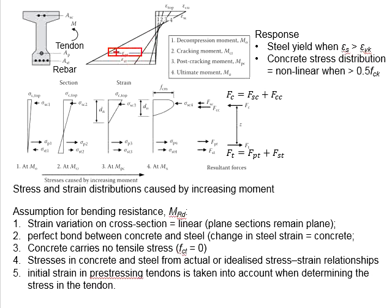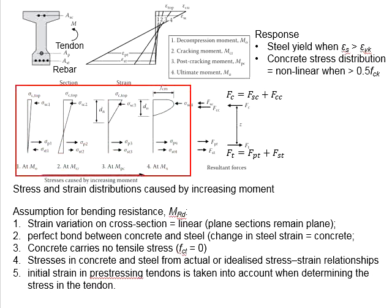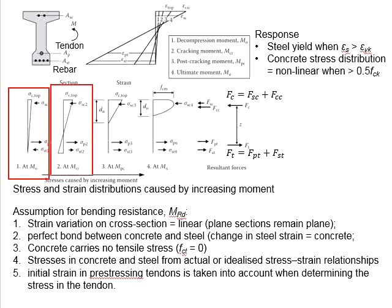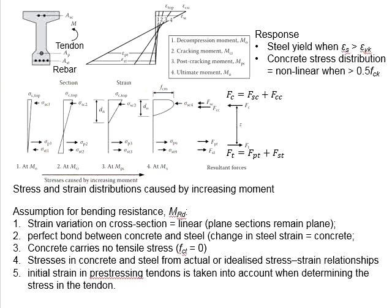From the strain developed within the sections, we are able to determine the compressive stress and tensile stress in the concrete, tendon, and reinforcement bar accordingly. The diagram here shows the stress profile of the sections at different stages of the moment: the decompression moment, cracking moment, post-cracking moment, and ultimate moment. The stress profile is essentially identical to the strain profile, especially before cracking occurs.